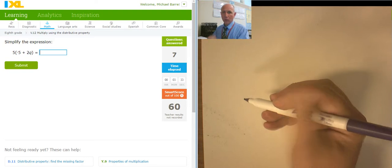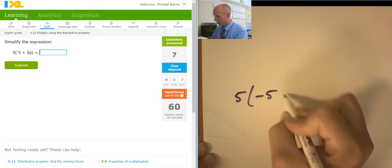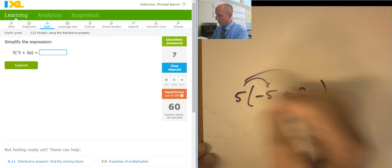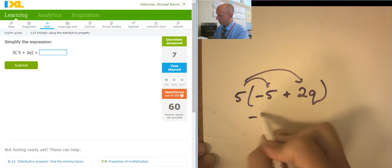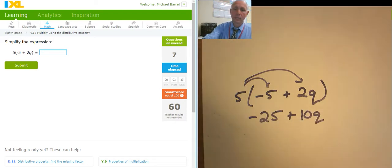So 5 times (-5+2Q) is negative 25 plus 10Q. Negative 25 plus 10Q.